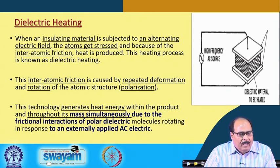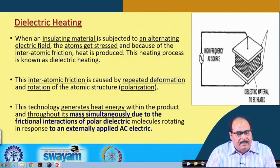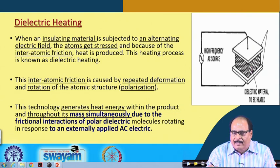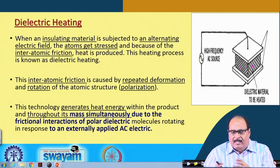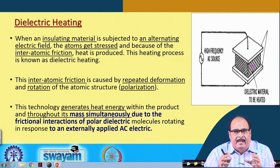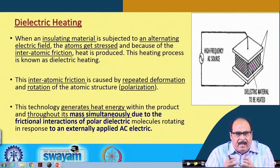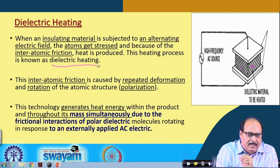What happens when an insulating material is subjected to an alternating electric field? As you can see in the figure, there is some dielectric material kept here, and an alternating electric field through some AC source is supplied to this material. When this electric field is applied, the atoms in the material get stressed and because of inter-atomic friction, heat is produced. This heating process is known as dielectric heating.